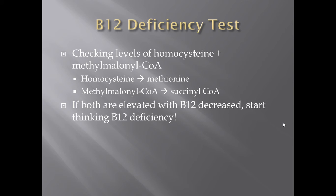To test for B12 deficiency, you can do the Schilling test, or check levels of homocysteine and methylmalonyl-CoA. Since B12 is required to convert homocysteine to methionine, a B12 deficiency causes homocysteine to build up. B12 is also required to convert methylmalonyl-CoA to succinyl-CoA, so methylmalonyl-CoA will accumulate as well.